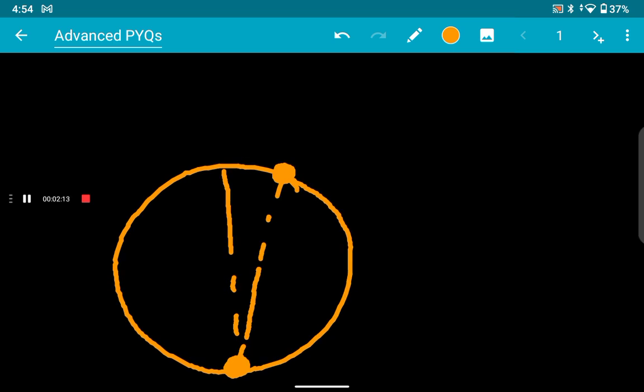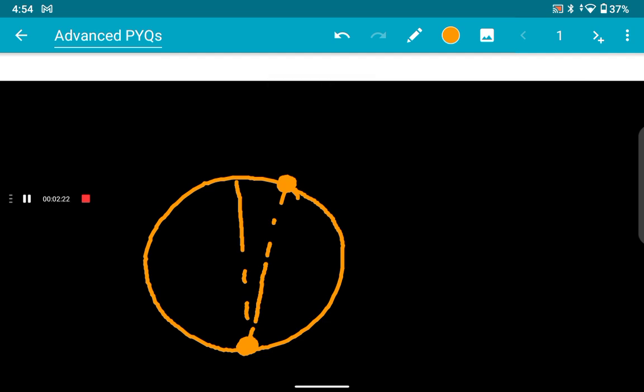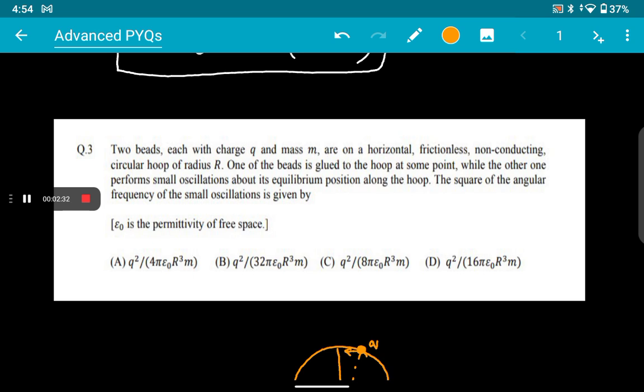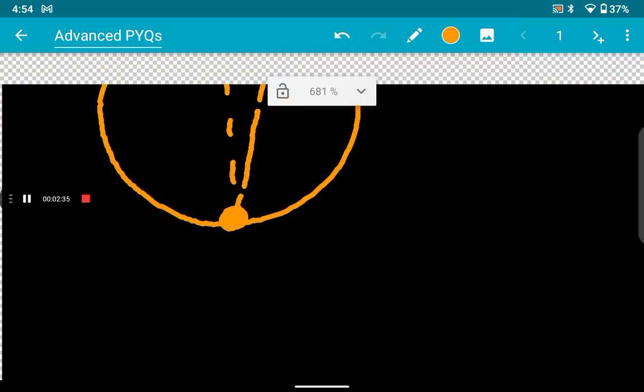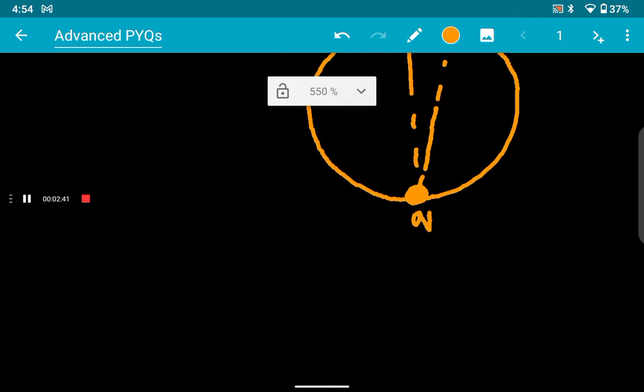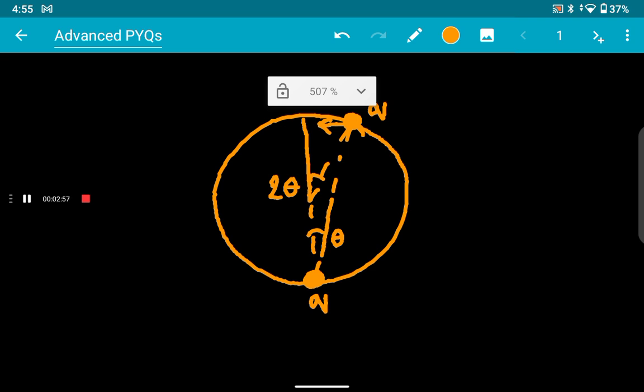A charge is oscillating due to the repulsion from this other charge. Let's draw these lines, and we will have a force here due to repulsion. So we will have a restoring force in this direction. This is q and this is also q, mass m. This is q, and this radius is r. Let this angle be theta, so this angle will be 2 theta.